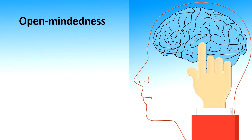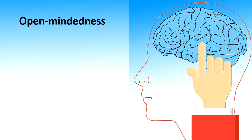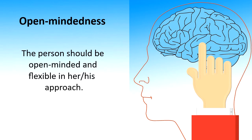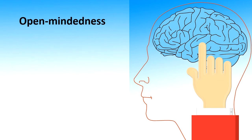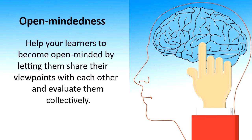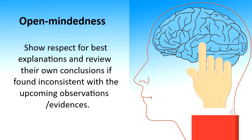Next is open-mindedness. Open-mindedness means a person listens to others and is willing to change their mind if warranted. The person should be flexible in their approach and evaluate all observations, inferences, and explanations carefully, then accept those which are consistent with the evidences. You need to help your learners become open-minded by letting them share their viewpoints with each other and evaluate them collectively. They should show respect for the best explanations and review their own conclusions if found inconsistent with upcoming observations and evidences.